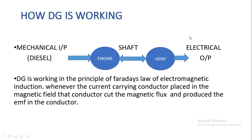When the generator rotates, it produces electrical power. This is the general concept of how a diesel generator works. From the block diagram we understand there are two parts: one is the mechanical engine part, and the other is the electrical generator part. In this video we will focus on the electrical generator.